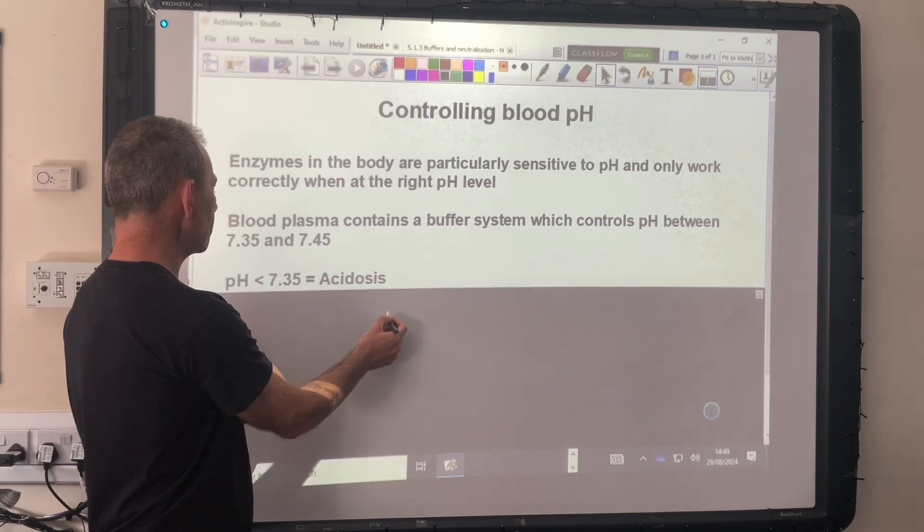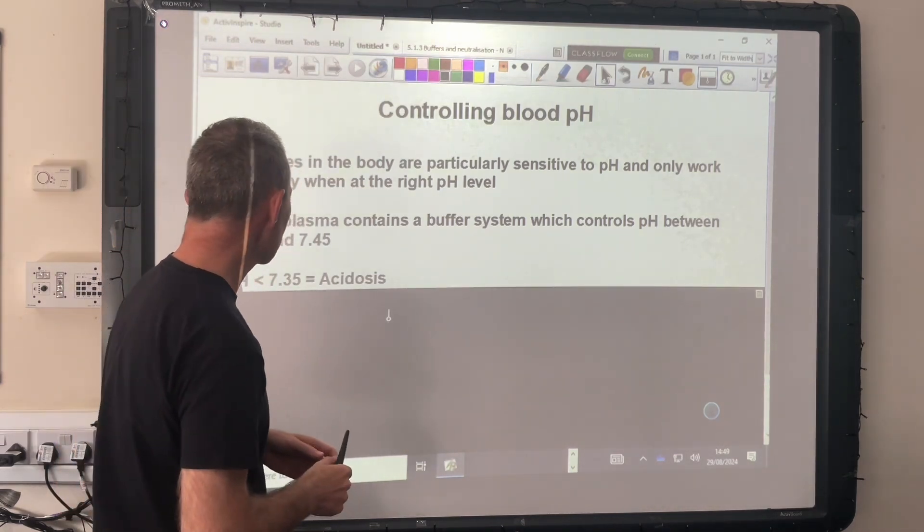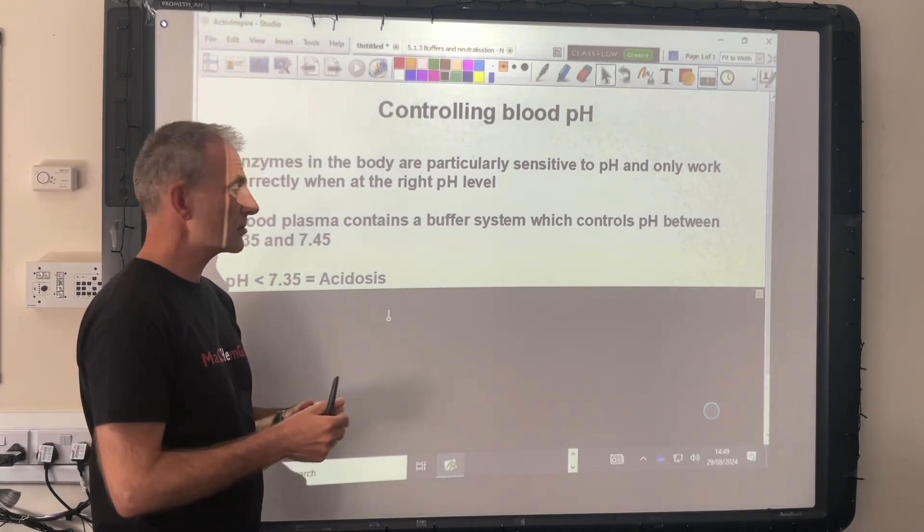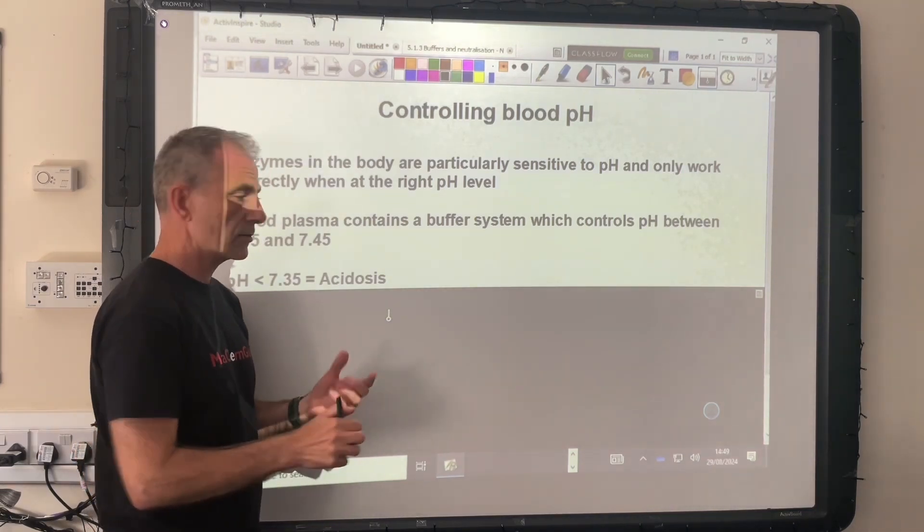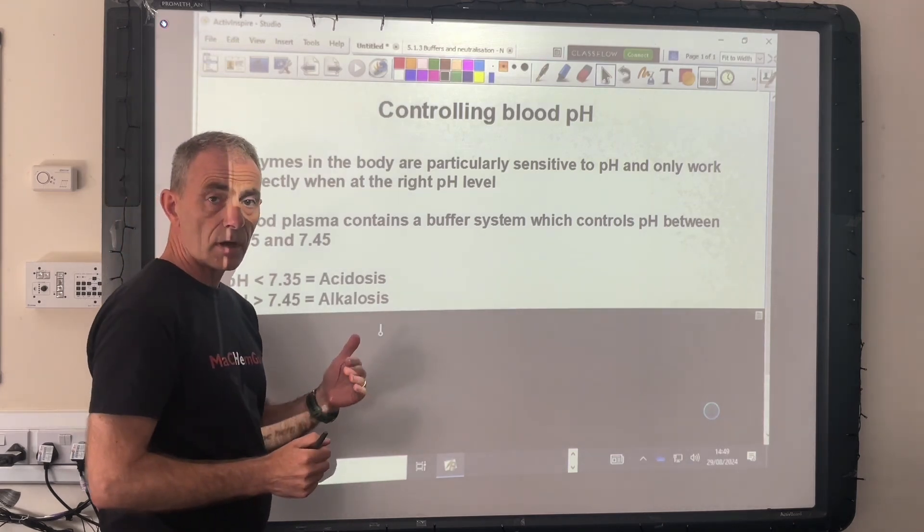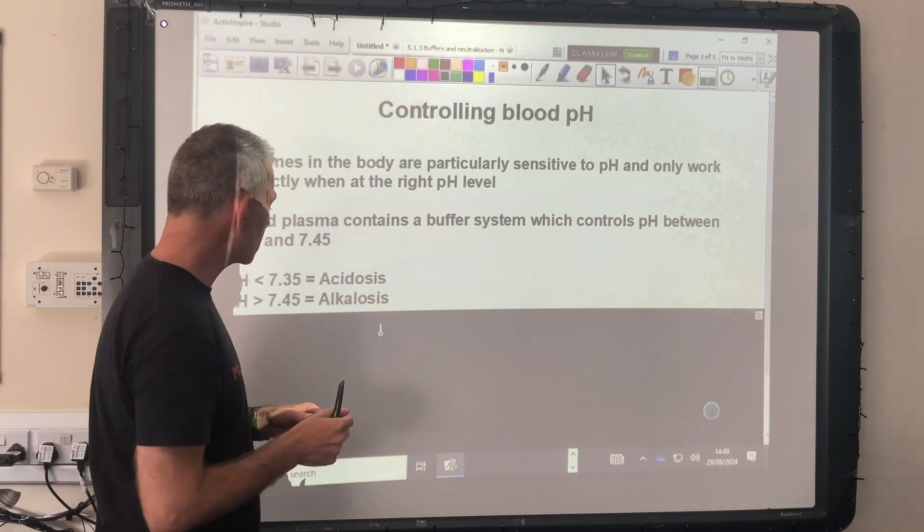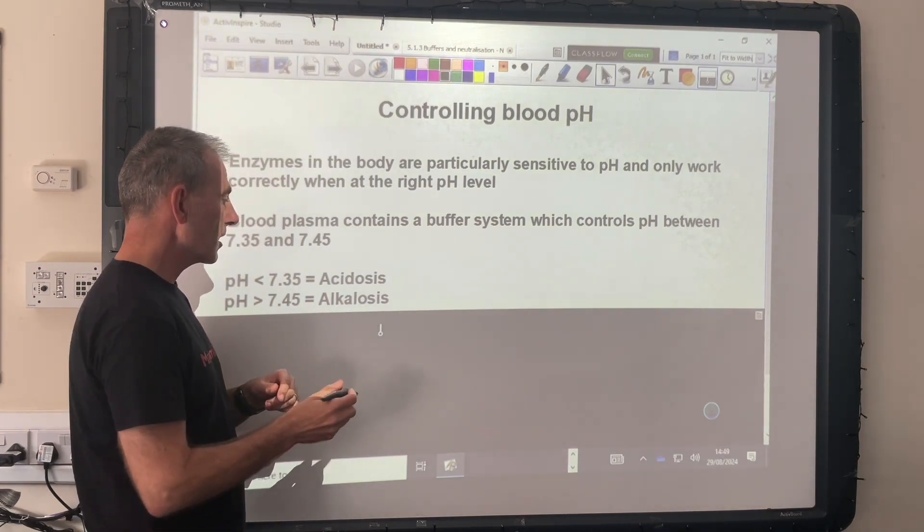If your blood pH falls below 7.35, obviously the blood's too acidic, so that condition is called acidosis. And if your blood pH goes above the upper limit, so it's too alkaline, that's known as alkalosis.